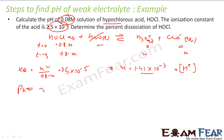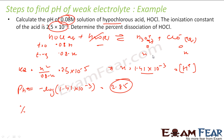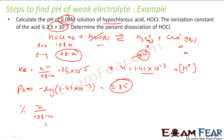So pH = −log[H⁺] = −log(1.41×10⁻³). Solving, we get pH = 2.85. That is our answer. The second part asks for percent dissociation of HOCl. Percent dissociation = x / (0.08 − x) × 100. Solving, we get 1.76%.